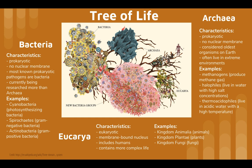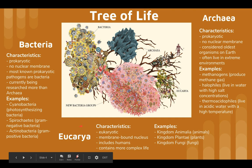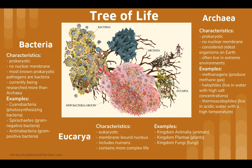In the tree of life, there are three domains of living: bacteria, archaea, and eukarya. The first domain is bacteria. Some characteristics of bacteria are that they are prokaryotic — they have no nuclear membrane. Most prokaryotic pathogens are bacteria, and they are currently being researched more than archaea.